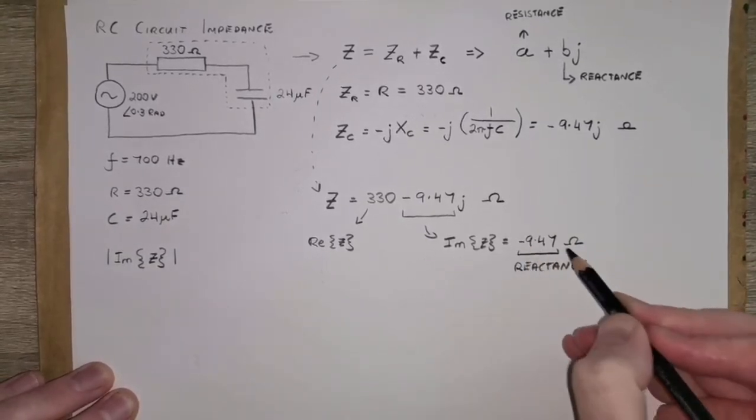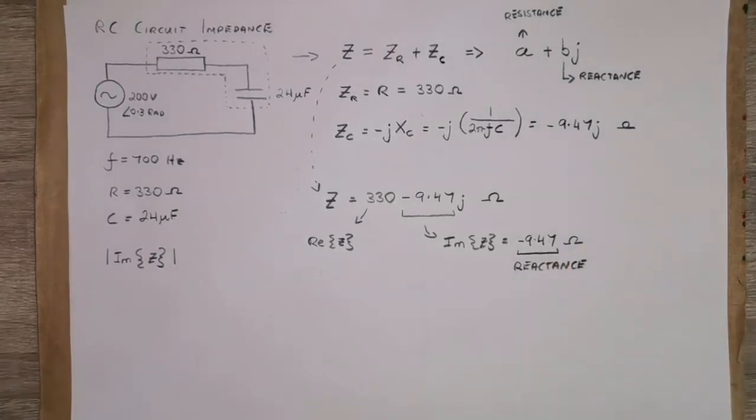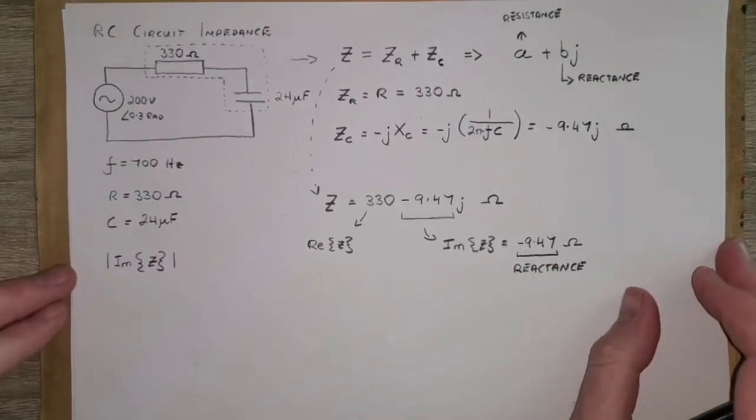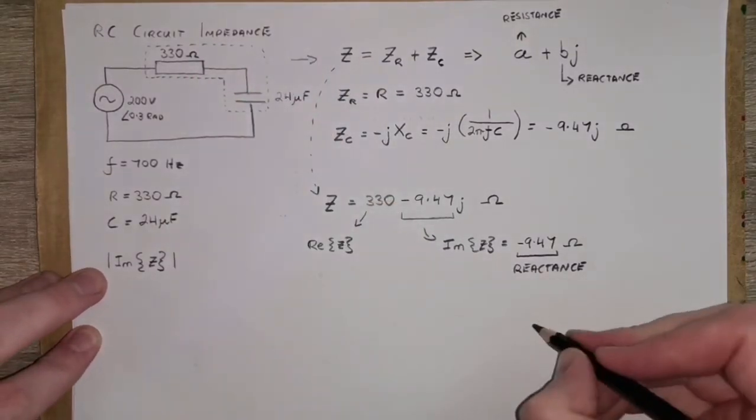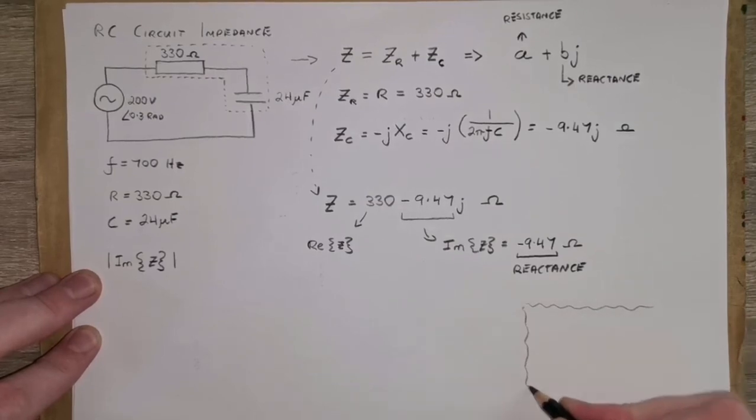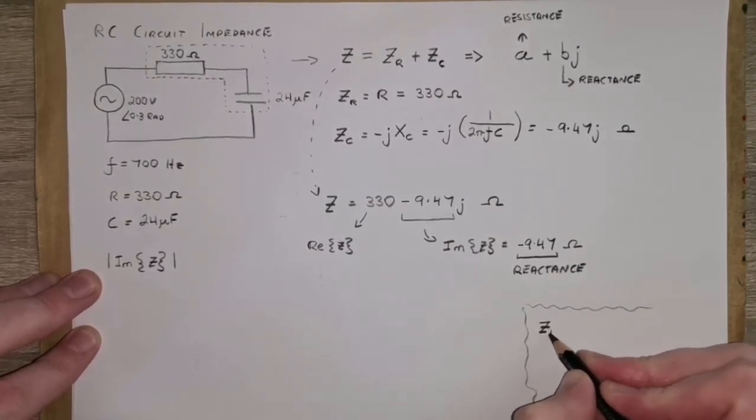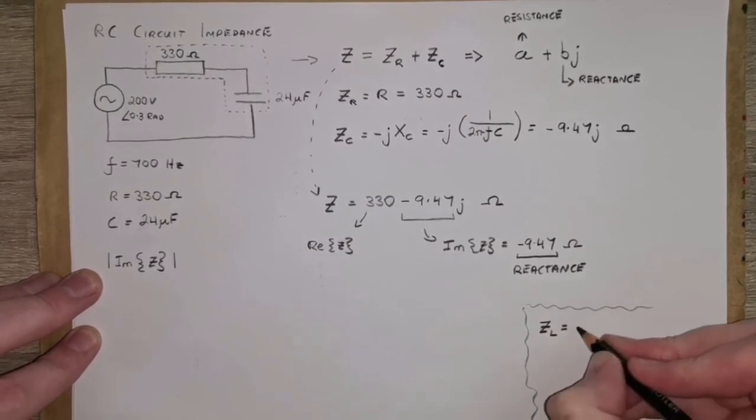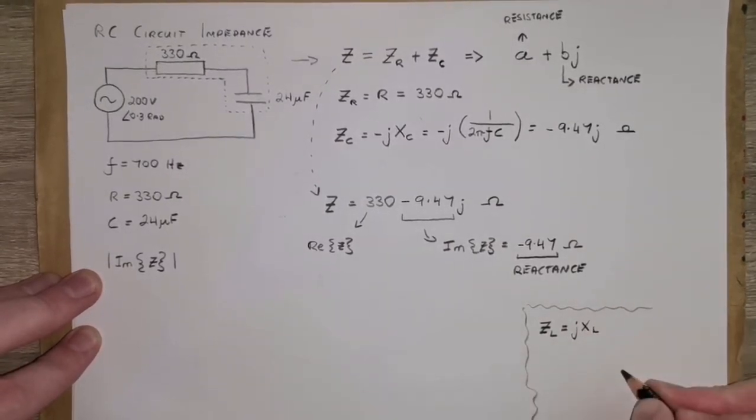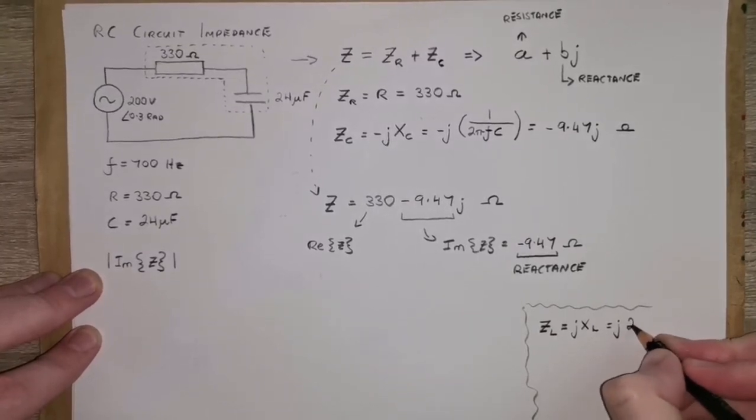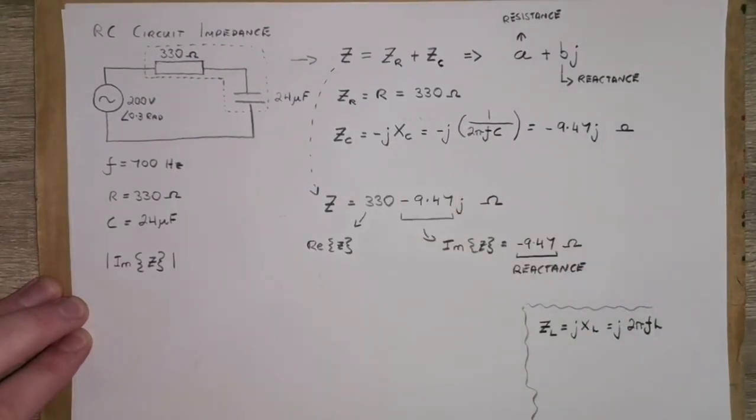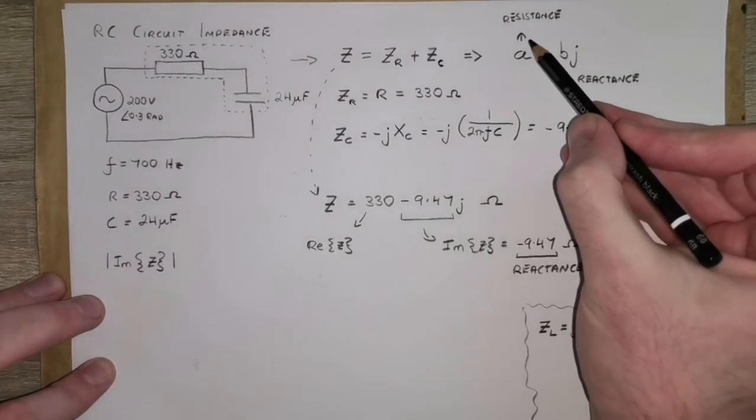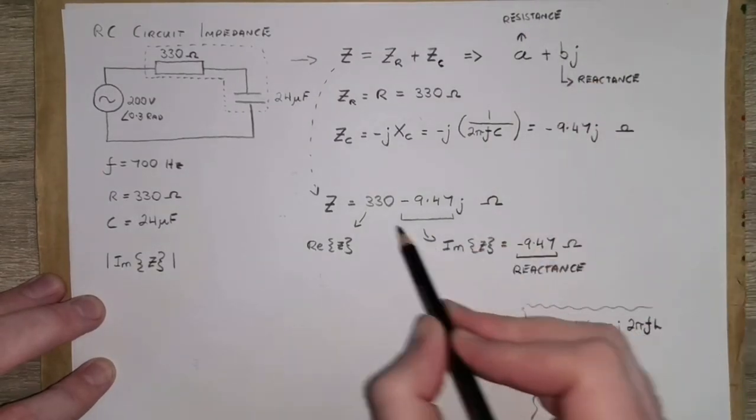And the same approach would be taken for a question if it was RC, if it was RL, or if it was LC. The only difference here, as an aside, is that if we had an inductor in that question, the impedance of the inductor is J times XL, where XL is just 2 pi times L. And we'll take the same approach. But just understanding what the difference between the resistance and the reactance of the circuit will help you find out the proper answer.